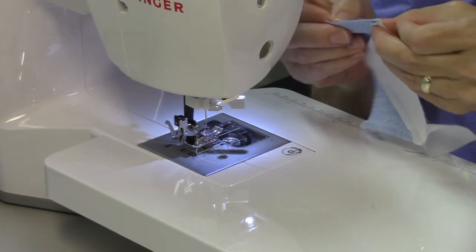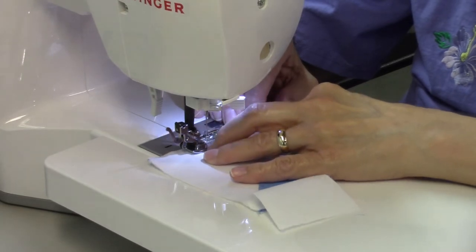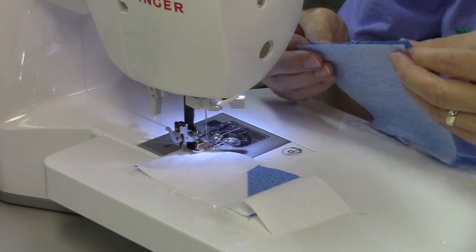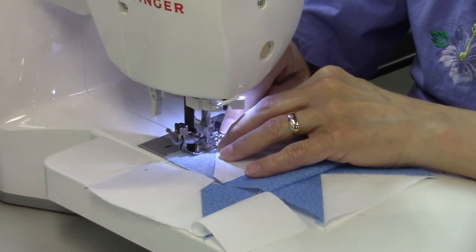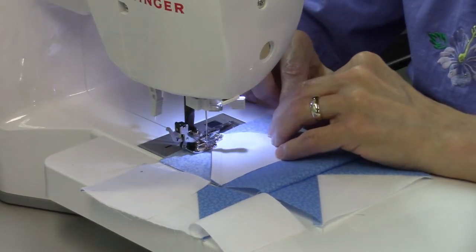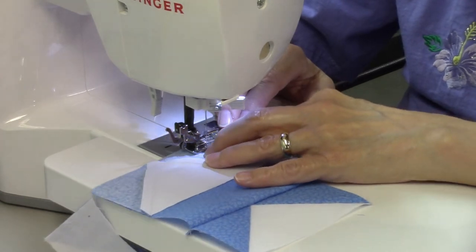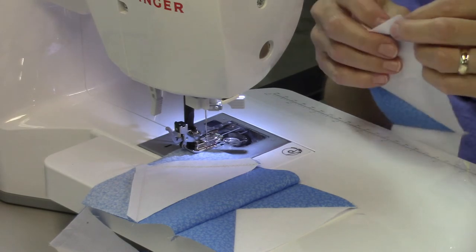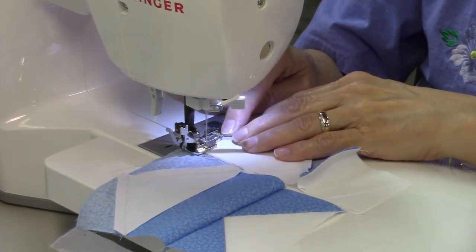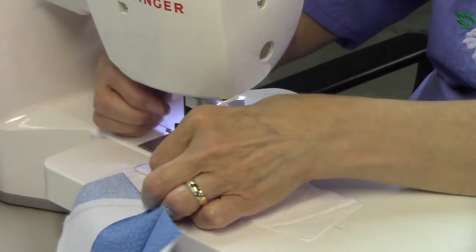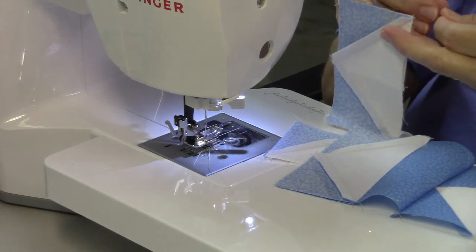So now I'm going to add the third piece onto each row. So here's the third piece for row one. Third piece for row two, and this is another flying geese unit where I have to watch the point. So I'm going to do the same thing. And try and stitch just a thread's width on the seam side of that point. Now the third piece of row three, and I'm going to flip this so the seam is facing me this time because it is facing down. Now I'm going to need to press my rows, so I'm going to cut them apart. And then I'm going to press them. And I'll show you how I'm doing that.